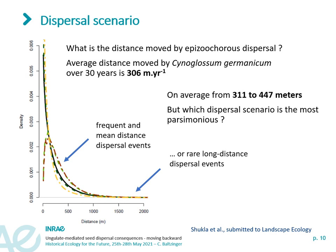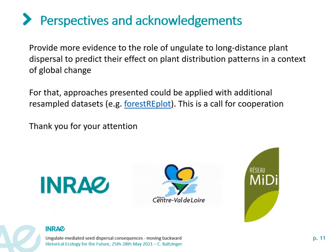The question we want to address in the future using the Arcambarrois dataset is to provide more evidence for the role of ungulates in long-distance plant dispersal. This is critical to predict their effect on plant distribution patterns in the context of rapid and drastic environmental changes. The approaches presented could be applied with additional datasets and cooperation — for instance with the Forest Replot Network. This is a real call for cooperation and discussion. Thank you for your attention; I am open to answer your questions.